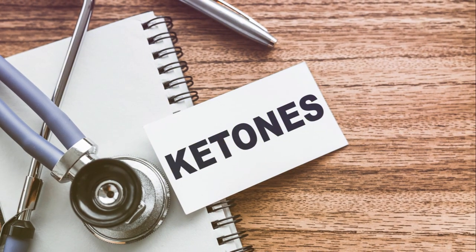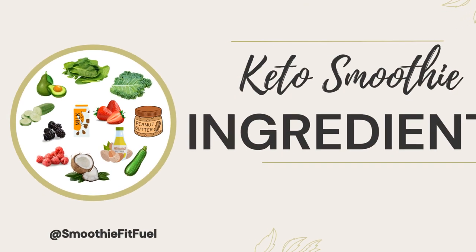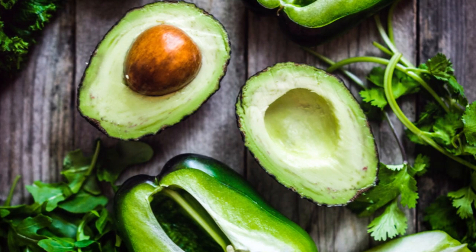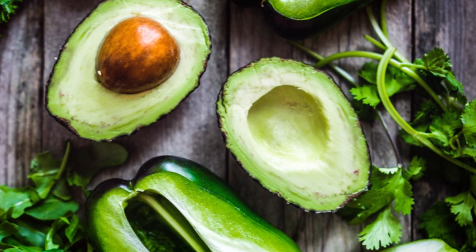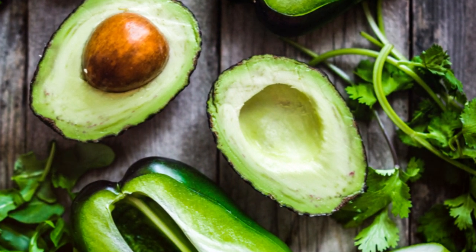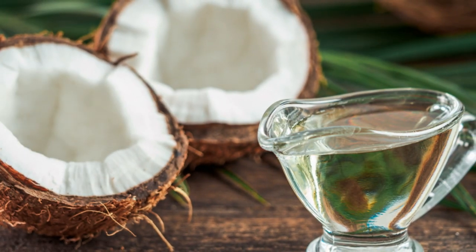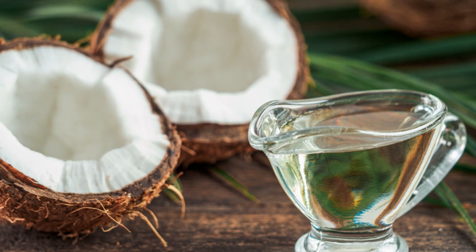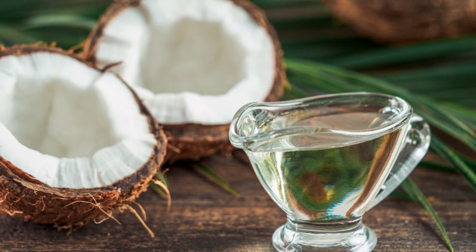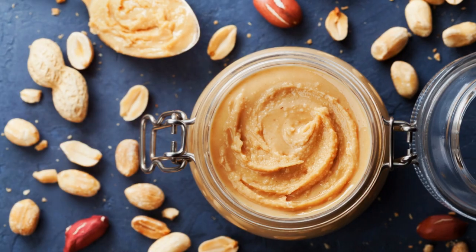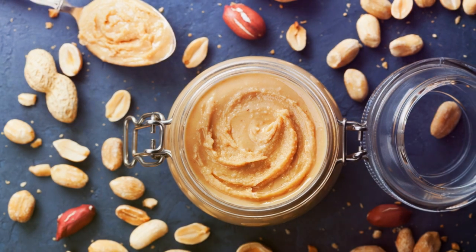Keto smoothies are crafted to be low in carbohydrates, moderate in protein, and high in healthy fats. Ingredients such as avocado, coconut oil, or MCT oil are commonly employed to introduce monounsaturated fats and medium-chain triglycerides (MCTs). These fats play a pivotal role in providing a creamy texture and facilitating the rapid conversion of energy into ketones. Nut butters like almond or peanut butter contribute both richness and a healthy fat profile.